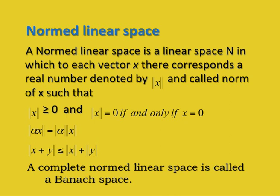We define a normed linear space, which is a linear space in which to each vector x there corresponds a real number denoted ‖x‖, also known as the length of the vector, such that: ‖x‖ ≥ 0 and ‖x‖ = 0 if and only if x = 0; ‖αx‖ = |α|‖x‖; and ‖x + y‖ ≤ ‖x‖ + ‖y‖. A complete normed linear space is called a Banach space, meaning every Cauchy sequence is convergent in N.